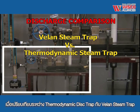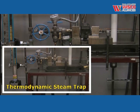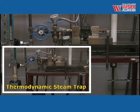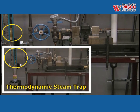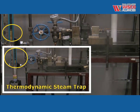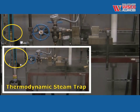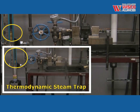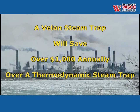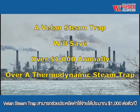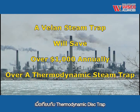Compare the discharge of the Volan steam trap with the thermodynamic disc trap. The Volan steam trap will save over $1,000 annually over that of a thermodynamic disc trap.